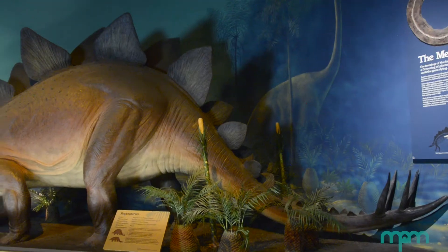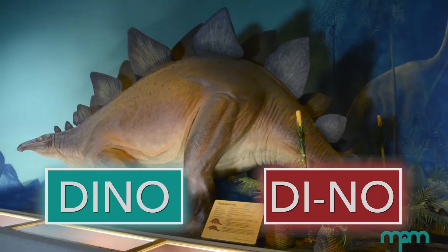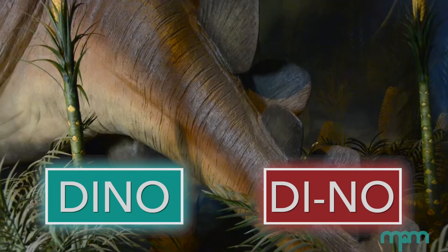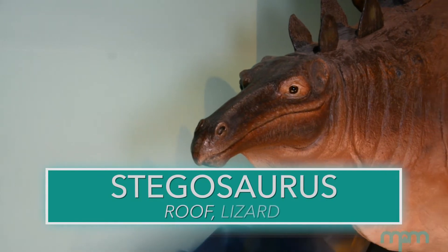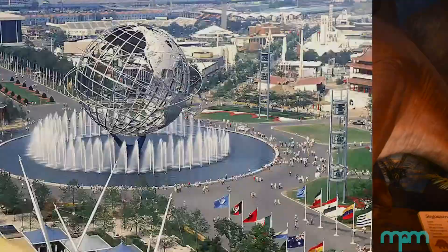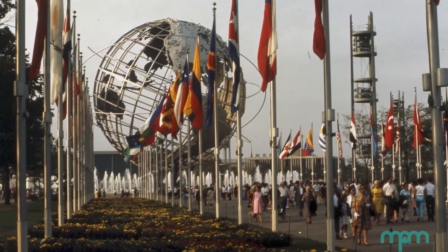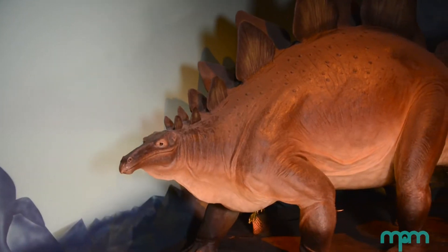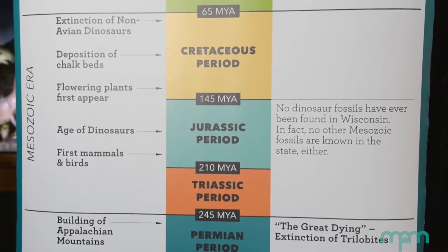Next up is the stegosaurus behind me. Is this a dino or not a dino? It was a dino. Its name means "roof lizard." This model is an MPM reconstruction which came from the 1964 and 1965 New York World's Fair. The stegosaurus was found in North America, Asia, Europe, and Africa during the late Jurassic.